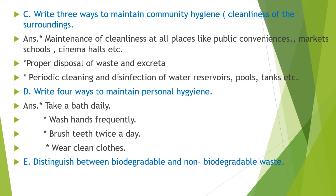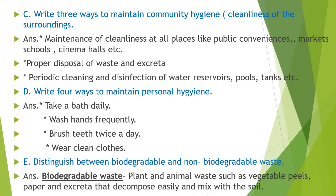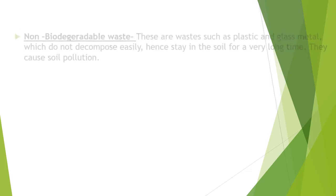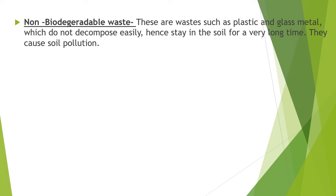Part E — distinguish between biodegradable and non-biodegradable waste. Biodegradable waste includes animal waste such as vegetable peels, paper, and excreta that can be decomposed easily and can mix with the soil. Non-biodegradable waste includes plastic, glass, and metal, which do not decompose easily; they stay in the soil for a very long time and cause soil pollution.